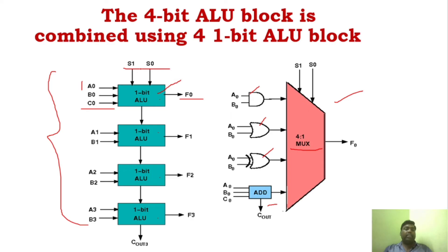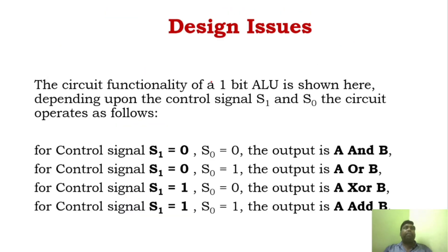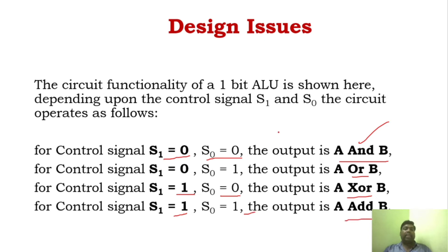Based on the two signals S1 and S0, the operations are predetermined. If S1=0 and S0=0, an AND operation takes place. If S1=0 and S0=1, an OR operation takes place. If S1=1 and S0=0, an XOR operation takes place. If both S1=1 and S0=1, an ADD operation takes place. This is the functionality of a 1-bit ALU — it produces only one operation at a time based on the input signal.